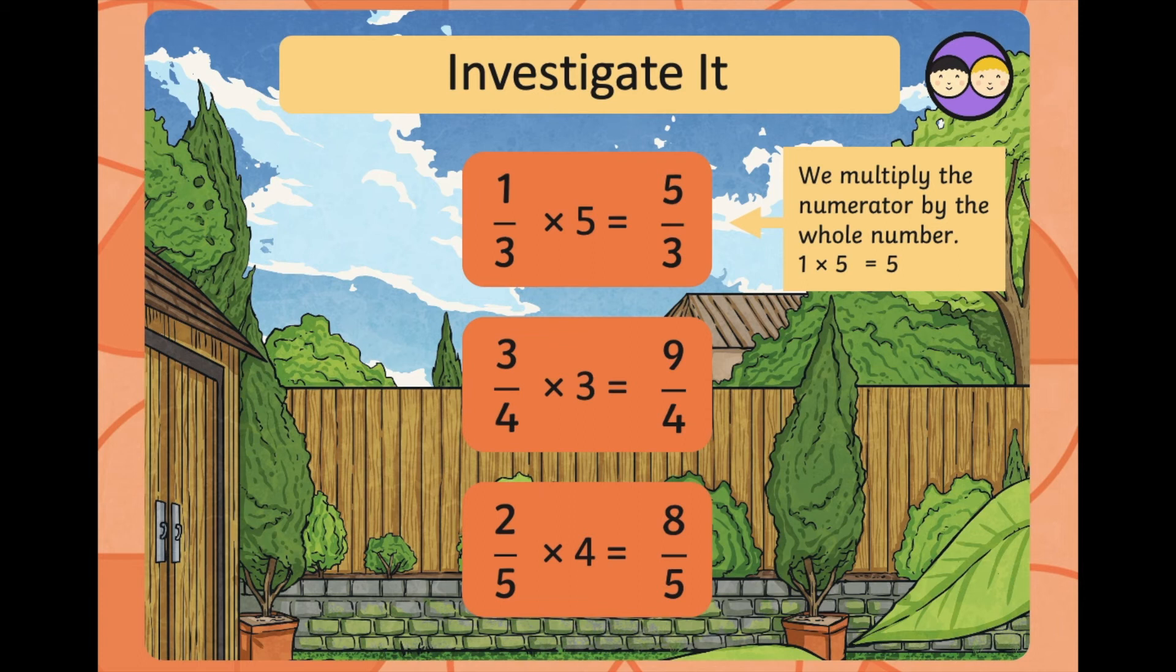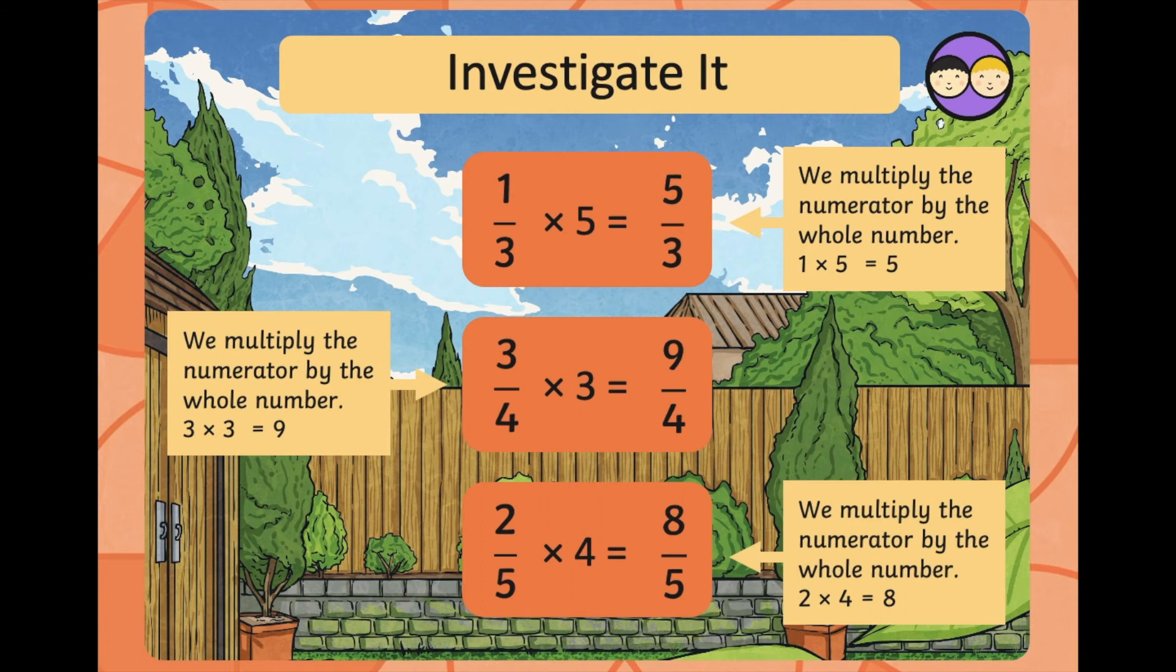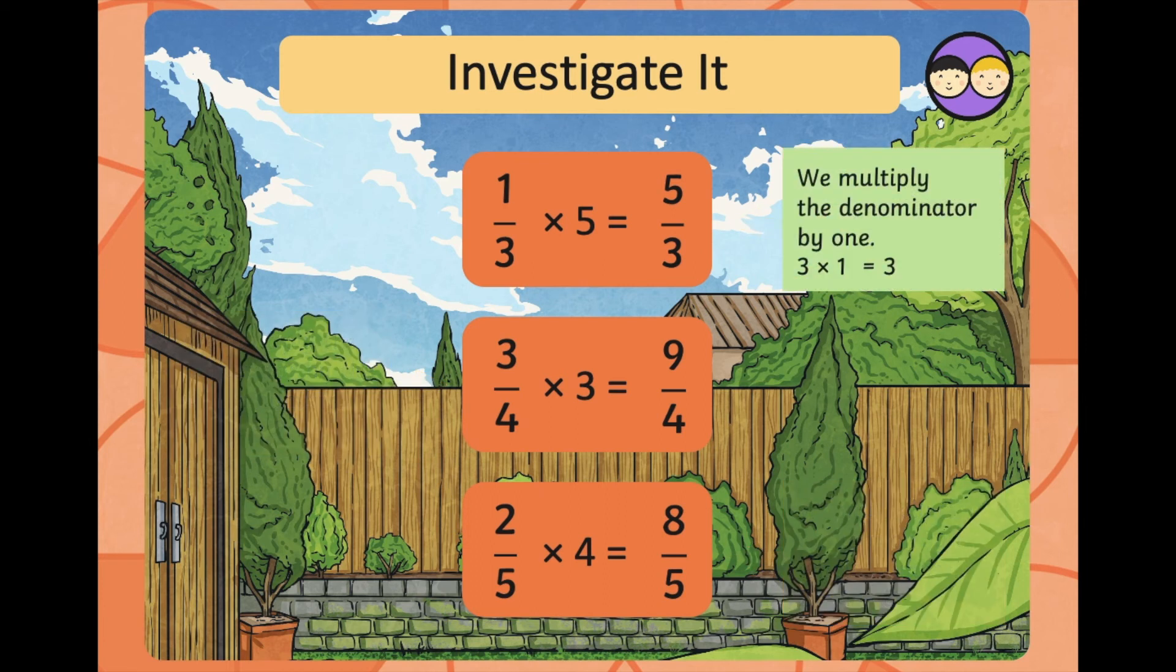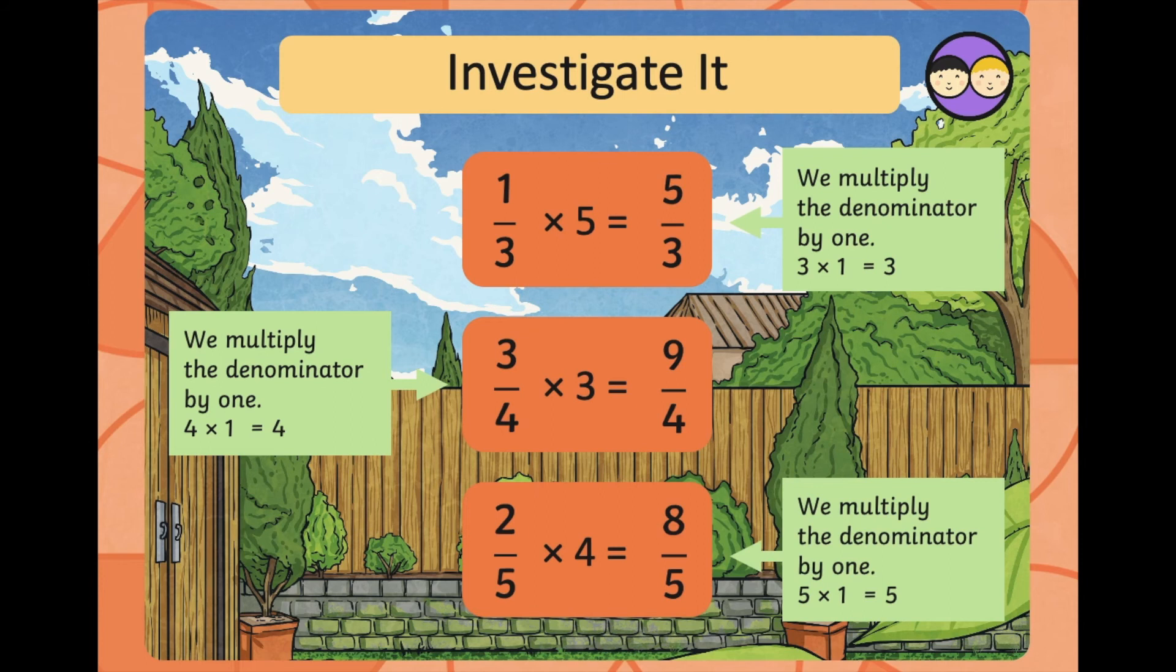We multiply the numerator by the whole number. One times five equals five. And again here, the numerator three multiplied by three equals nine. And this third one, the numerator two multiplied by four equals eight. We multiply the denominator by one. Three times one equals three. Four times one equals four. And five times one equals five.